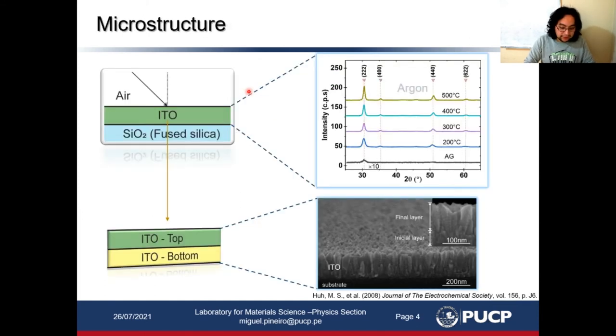First, we need to know how the microstructure of ITO behaves. This figure shows the XRD pattern of ITO thin films at different annealing temperatures in argon atmosphere, where we can see ITO as-grown presents an amorphous structure, and as we increase the annealing temperature, the film becomes more crystallized.